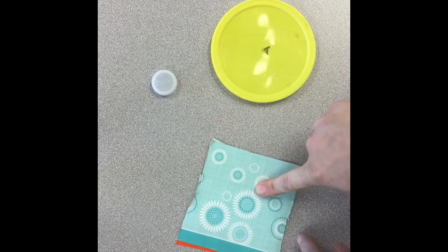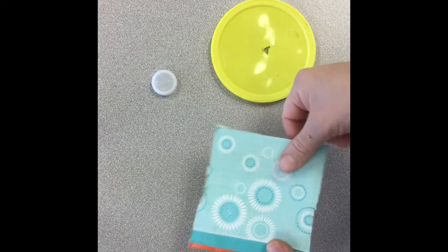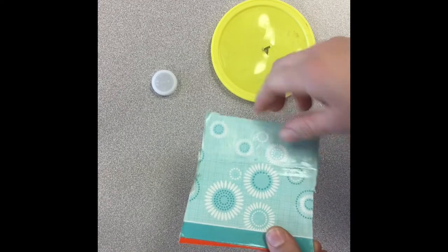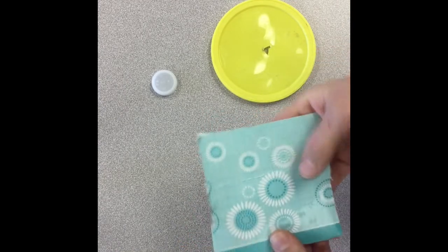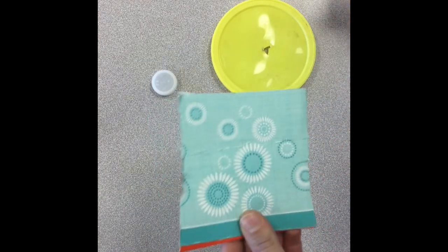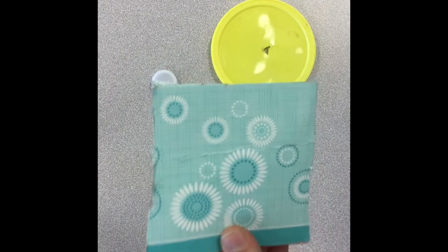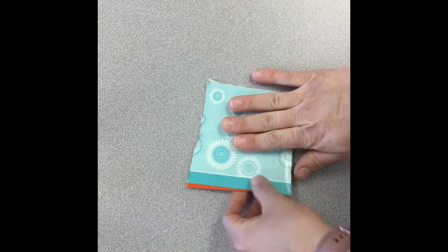So the first one I'm going to show you is how to trace and cut your own wheel out of cardboard. I think this is the easiest method. You don't need any help. You should be able to do this one by yourself.